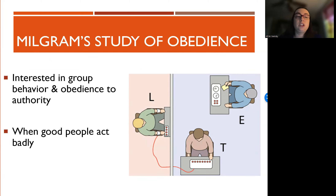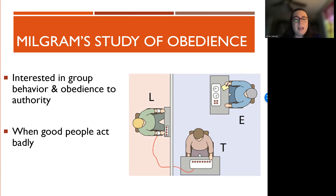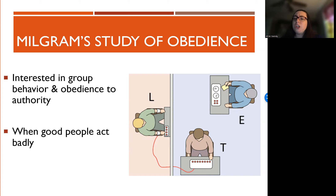Milgram conducted his research in July 1961. It was three months after the start of the trial of German Nazi war criminal Adolf Eichmann. Milgram's ultimate research question was: did Eichmann and his accomplices perform the atrocities of the Holocaust because they were just following orders? In other words, he was curious about when good people do bad things because they're told to do so by an authority figure.